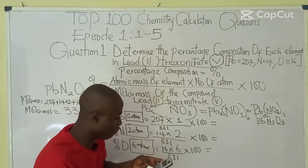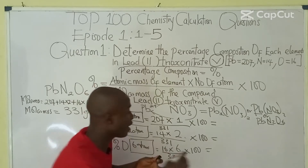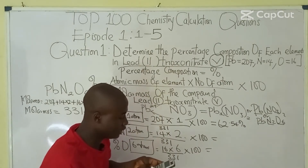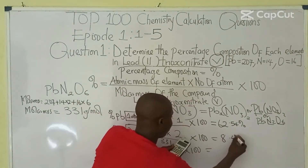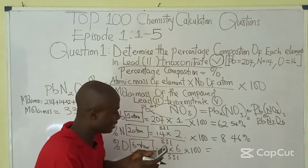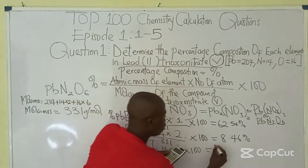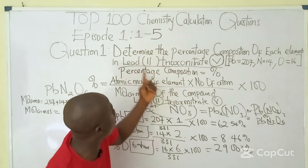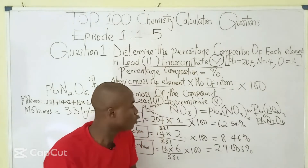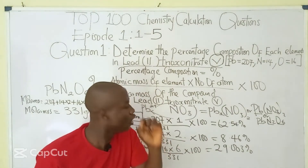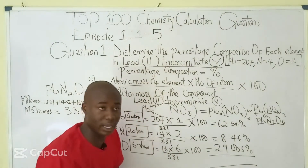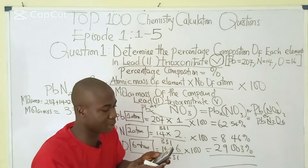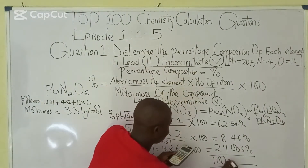Computing the answers: for Pb, 207×1 over 331 ×100 = 62.54%. For nitrogen, 14×2 over 331 ×100 = 8.46%. And for oxygen, 16×6 over 331 ×100 = 29.003%. To verify, we add all percentages: 62.54% + 8.46% + 29.003% = 100.003%, which confirms our answers are correct.